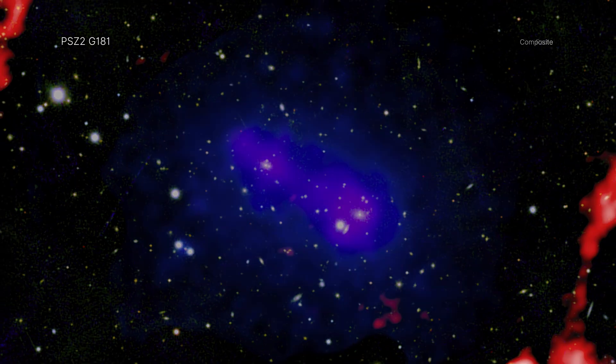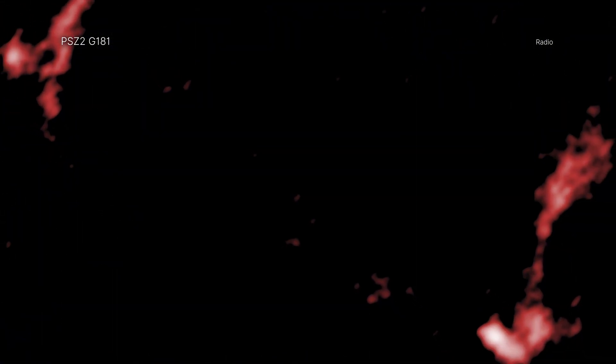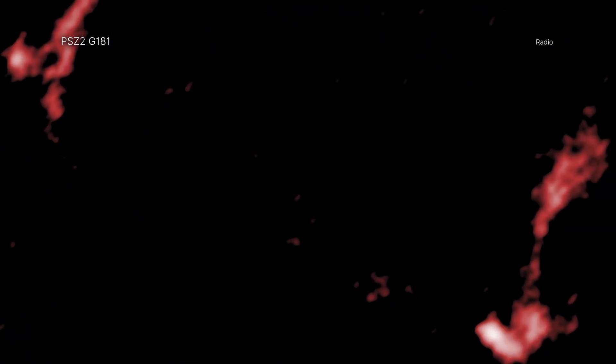Previously, radio observations from the Low Frequency Array, or LOFAR, spotted parentheses-shaped structures on the outside of the system. LOFAR is an antenna network of radio telescopes in the Netherlands.